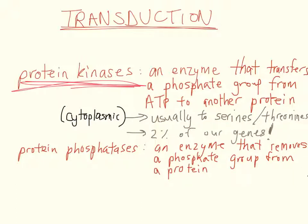We actually talked about kinases in a previous lecture on reception. We talked about receptor tyrosine kinases, which are able to phosphorylate tyrosine residues on each other in the dimer form. Normally in cytoplasmic kinases, the residues that are being phosphorylated are usually the serines and the threonines.